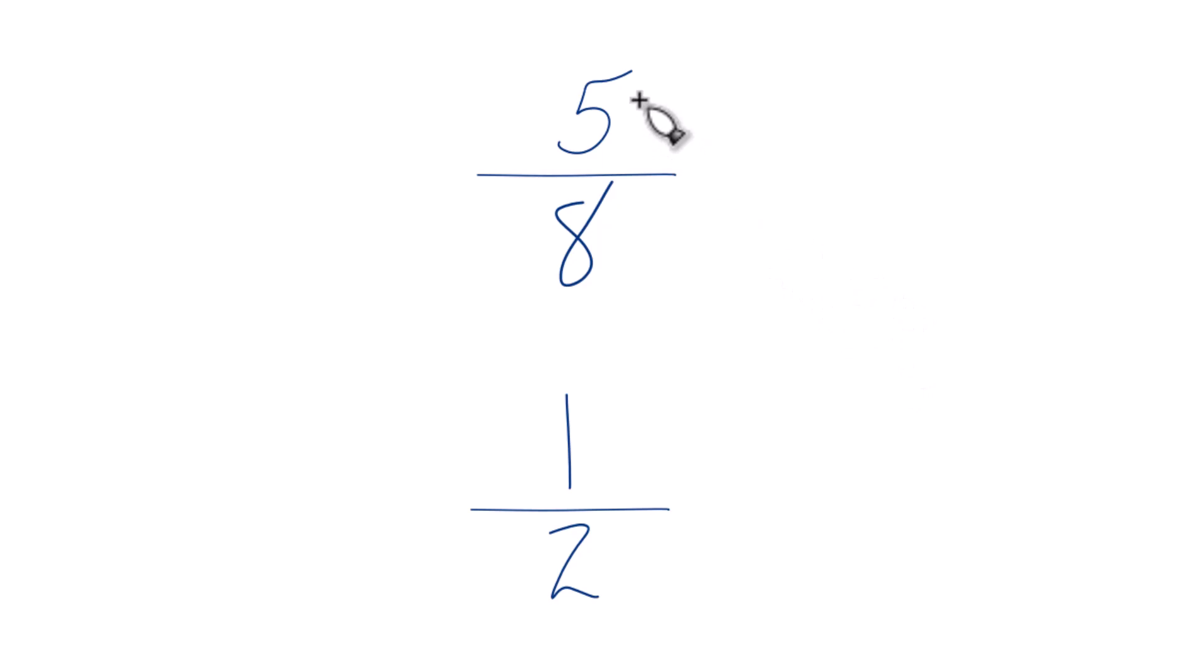First off, you could just divide 5 by 8 on your calculator, then divide 1 by 2 on your calculator, and just compare the decimals. That would work. Probably what your teacher wants you to do, though, is to get a common denominator.